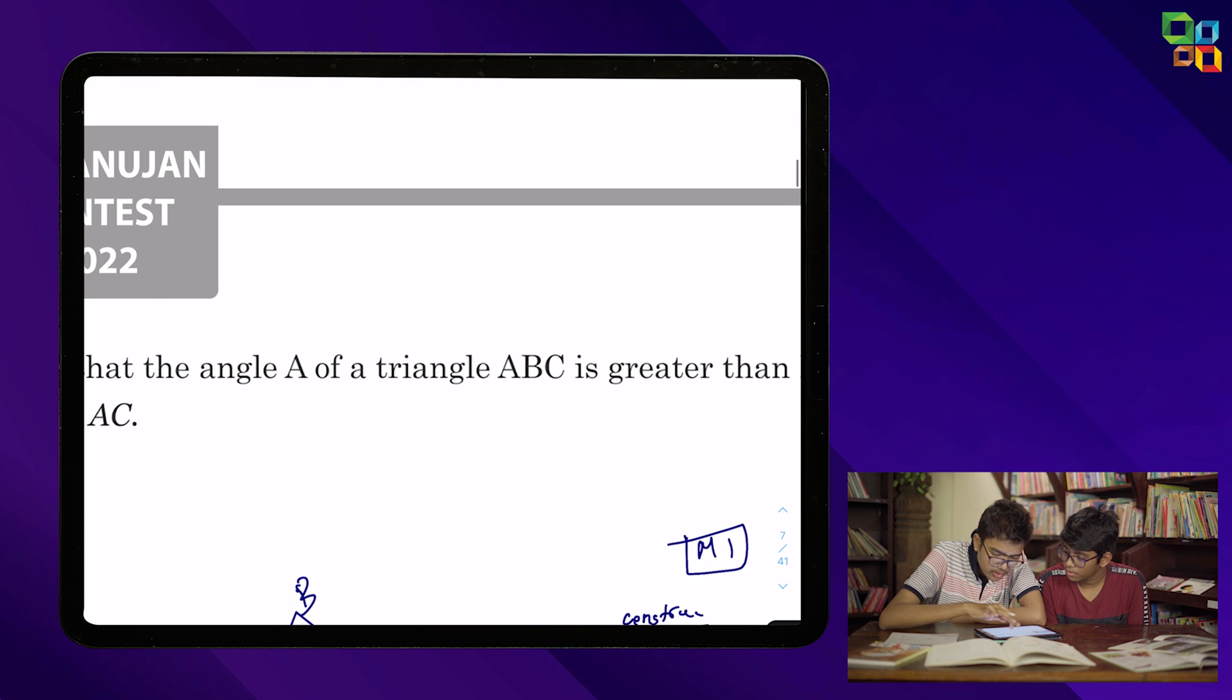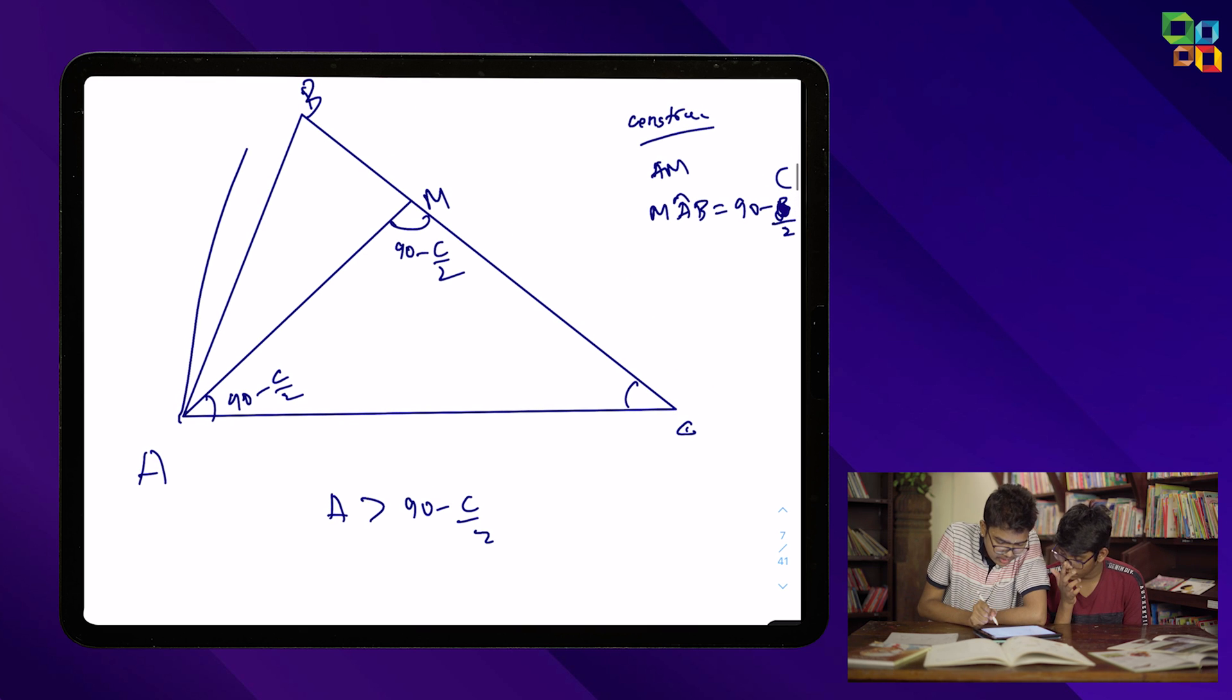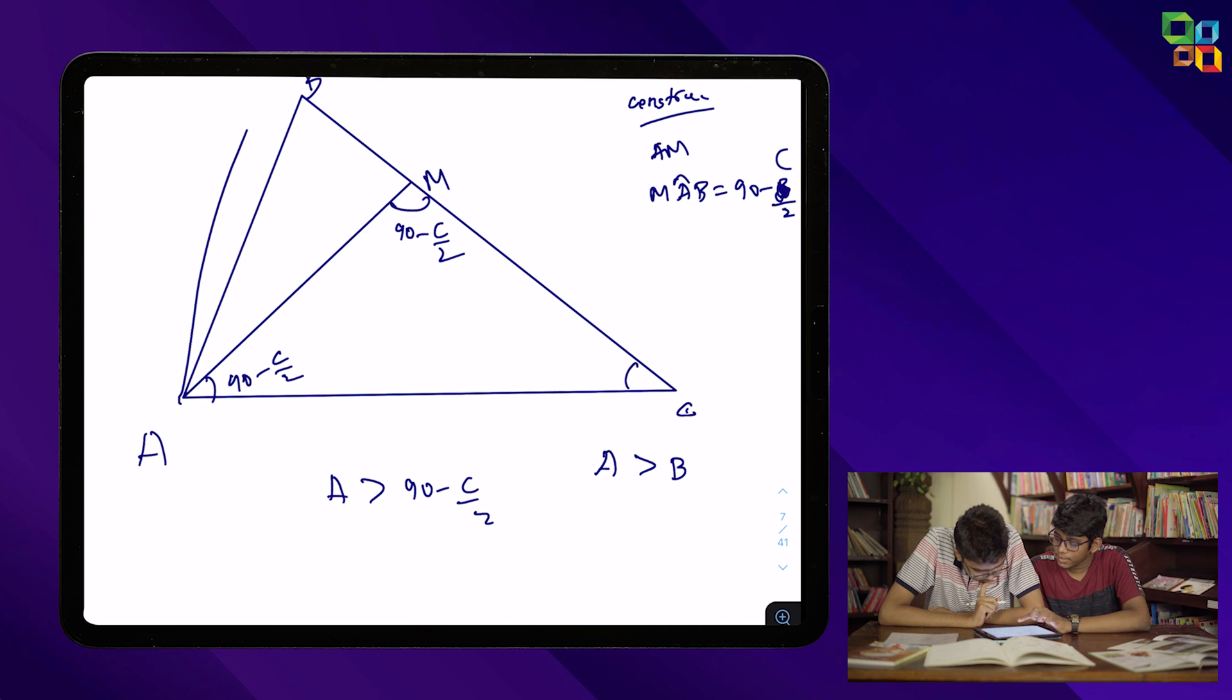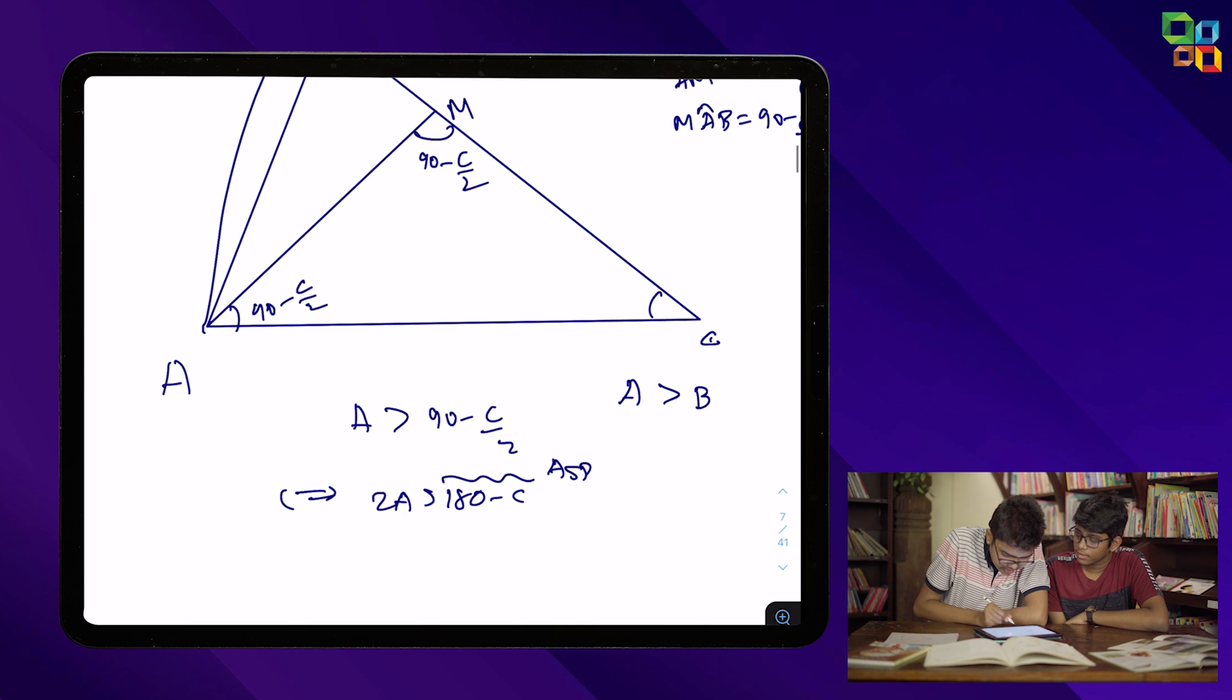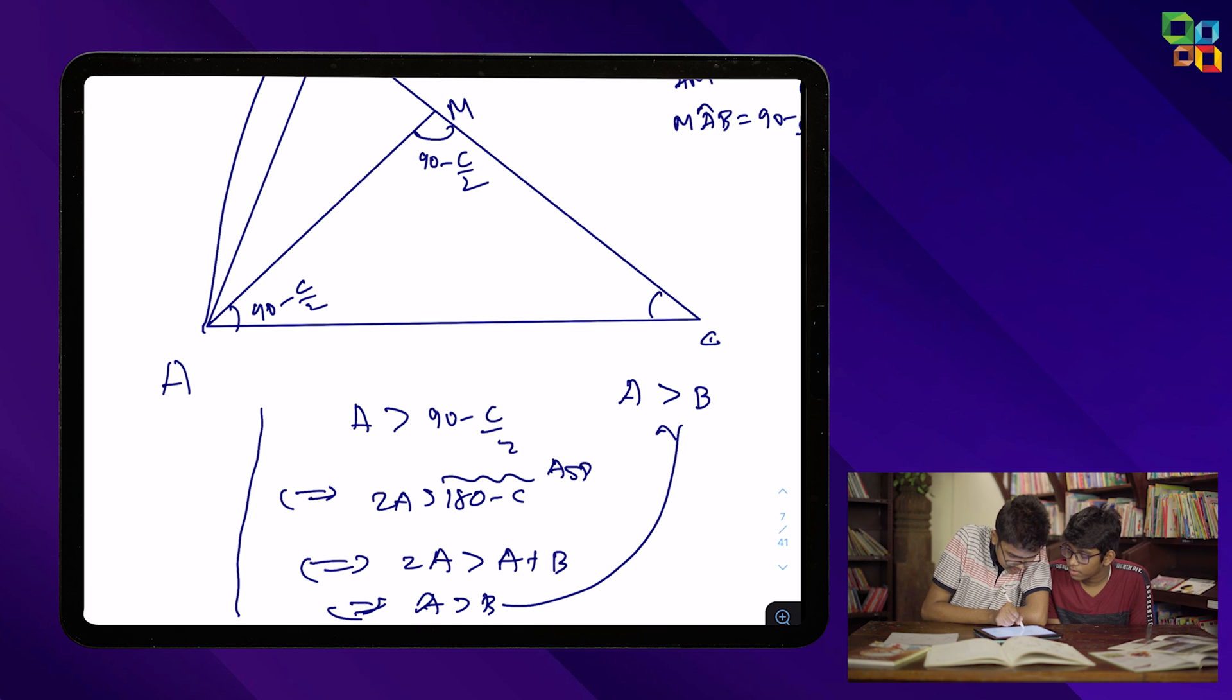But let us take what is given: A is greater than B. Can we somehow manipulate that? We can write C by 2 in terms of A and B. Correct. Then we can just multiply by 2, right? So this is if and only if 2A is greater than 180 minus C. Correct. And we spot angle sum property. So this is if and only if 2A is greater than A plus B, which is if and only if A is greater than B. Which is true. So we can run the argument backwards. All of this will be true. So A is greater than 90 minus C by 2. So this indeed lies inside the triangle. Now I think we are done.